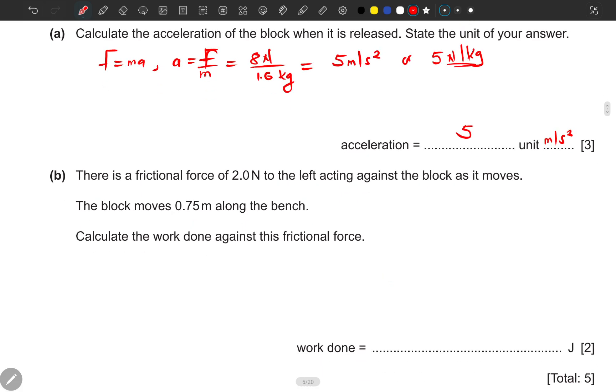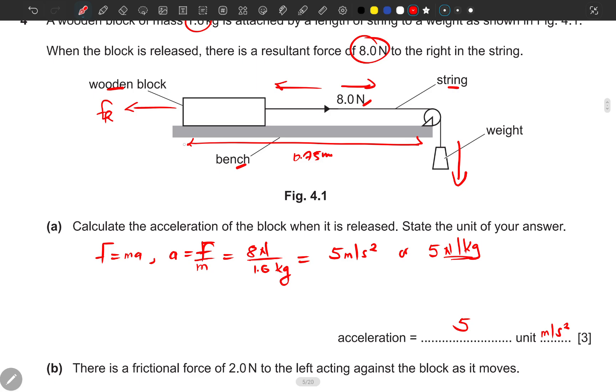So work done against the friction force will be equal to the friction force itself, Fr, multiplied by the distance moved. Now remember, the distance is linear, meaning it is common for both forces.